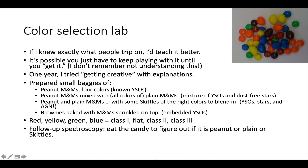Then I have a baggie with peanut and plain M&Ms, but I picked some skittles of the right colors to blend in — red, green, orange, yellow — and those skittles lurking among the M&Ms are the AGN. Then I made some brownies and before baking I sprinkled M&Ms on top so some sank into the batter — those are the embedded young stars. The red, yellow, green, and blue I call Class 1, Flat, 2, and 3.